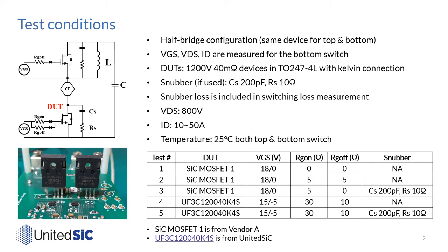The table summarizes all test conditions. In tests 1 to 3, we use silicon carbide MOSFET from Vendor A to conclude that snubber is more effective and efficient than using high RGOFF. In test 1, we switch the device as fast as possible using 0 ohm RG on and 0 ohm RG off. In test 2, we increase both RG on and RG off to 5 ohm to see the high RG effect on EMI. In test 3, we keep 5 ohm RG on, decrease RG off from 5 ohm to 0 ohm, and use snubber to control the turn-off VDS spike. In tests 4 and 5, we repeat the snubber test on the United SiC part to show snubber is a general solution.